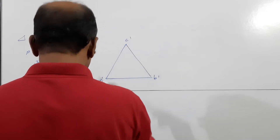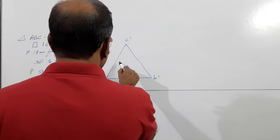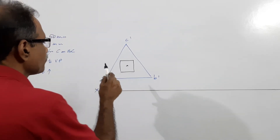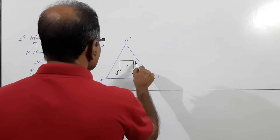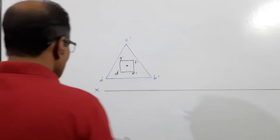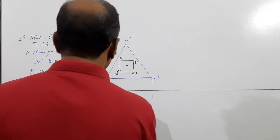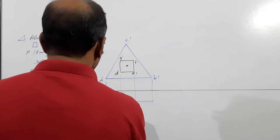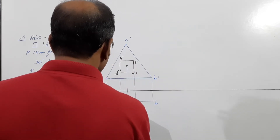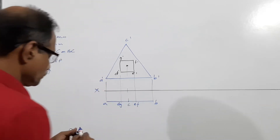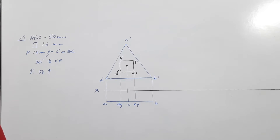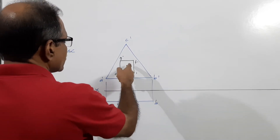I am drawing the triangle A-dash, B-dash, C-dash with the square hole at the center. The square vertices are labeled A-dash, B-dash, C-dash, D-dash, E-dash, F-dash, G-dash, with the center marked. I then locate point P. The side of the square is 16 mm.